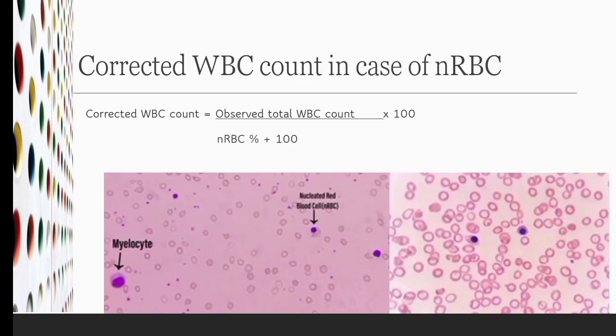When your cell counter does not give the corrected WBC count in case of nucleated RBCs present in the peripheral blood, then one must do the corrected WBC count manually by following formula. The corrected WBC count equals the observed total WBC count upon nRBC in percent plus 100, whole into 100, where the nRBC percent are the nucleated RBC per 100 WBCs.